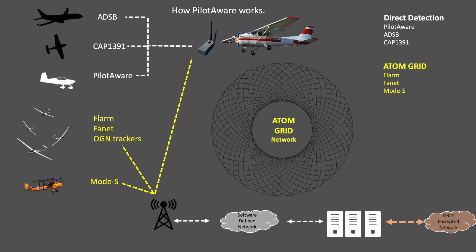Secondly, all PilotAware devices interact with the network of PilotAware Atom stations. This ground network detects all aircraft equipped with FLARM and mode S devices and rebroadcasts their positions to the airborne PilotAware devices. At the same time, all information collected by the AtomGrid network is passed to the PilotAware servers.